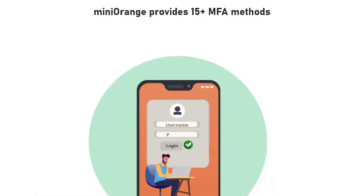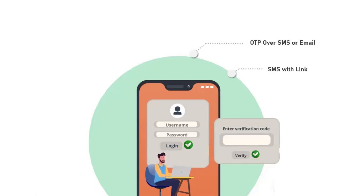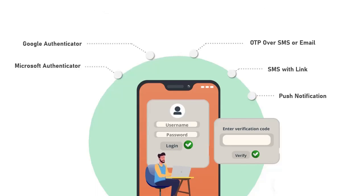Mini Orange provides 15 plus MFA methods like OTP over SMS or email, SMS with link, push notifications, Google Authenticator, Microsoft Authenticator, and hardware tokens.